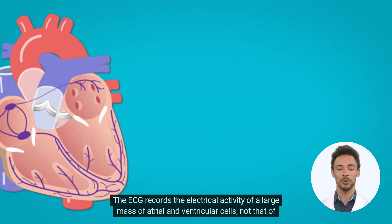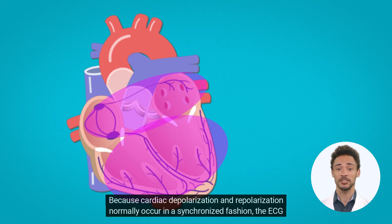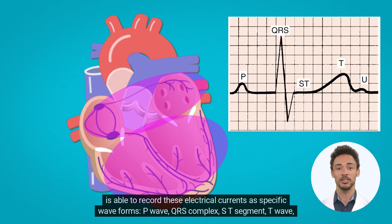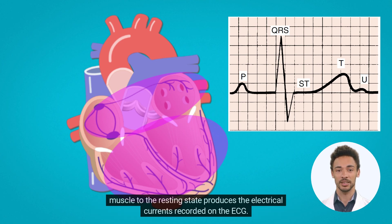The ECG records the electrical activity of a large mass of atrial and ventricular cells, not that of just a single cell. Because cardiac depolarization and repolarization normally occur in a synchronized fashion, the ECG is able to record these electrical currents as specific waveforms – P-wave, QRS complex, ST-segment, T-wave, and U-wave. The spread of stimuli through the atria and ventricles, followed by the return of stimulated atrial and ventricular muscle to the resting state, produces the electrical currents recorded on the ECG.